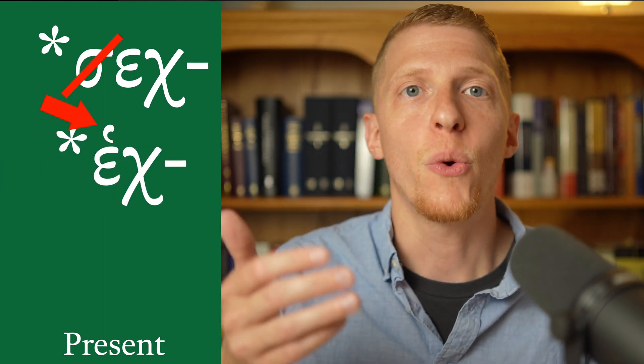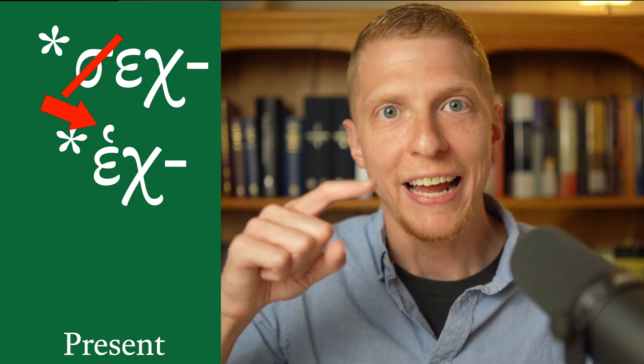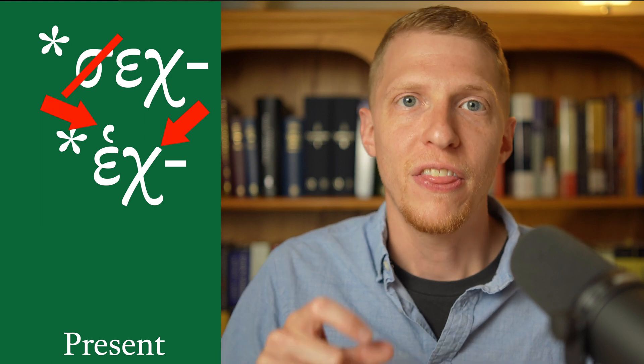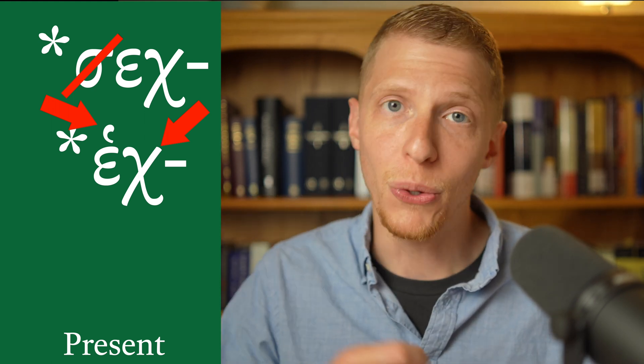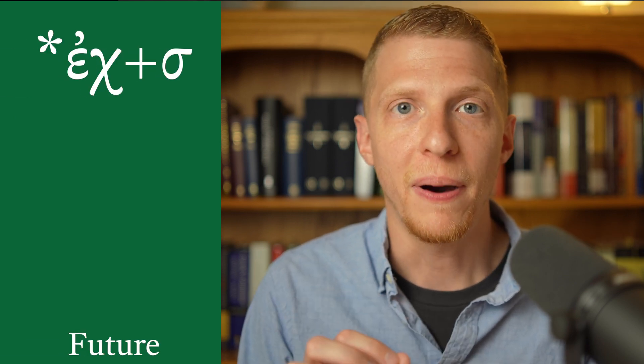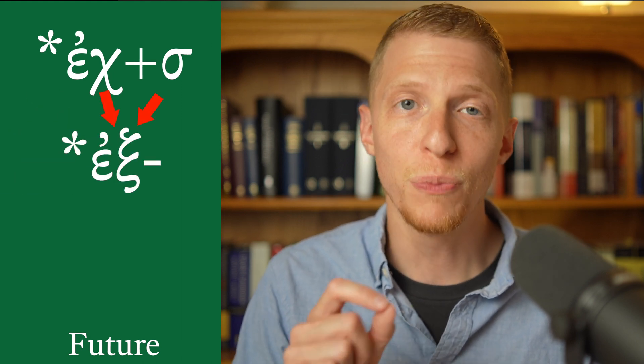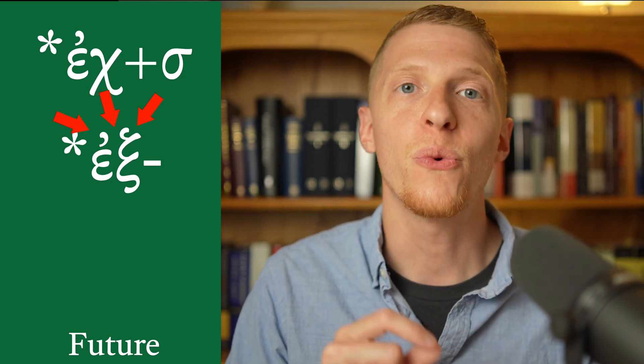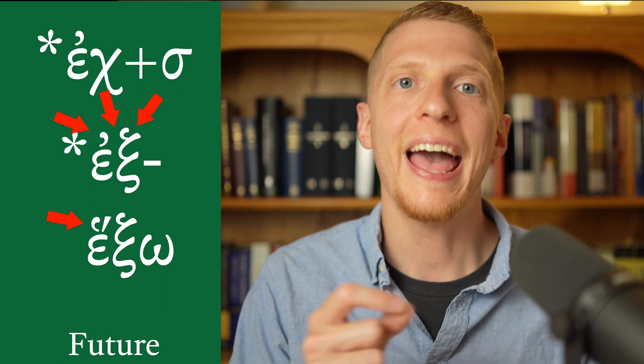Mounce tells us that the word ἔχω has a true root of σεχ, and that the sigma has dropped off. To replace the dropped sigma, a rough breathing has been added. But because there's a kappa at the end of the root — σεχ, then εκ — that rough breathing and that kappa don't like to be next to each other, so the rough breathing changes to a smooth breathing. That's where we get the word ἔχω. In the future form, something odd happens: that kappa combines with the sigma in the square of stops to give us a xi. This forces the smooth breathing mark to reconvert back to a rough breathing mark, so instead of getting ἔξω, we get ἕξω.